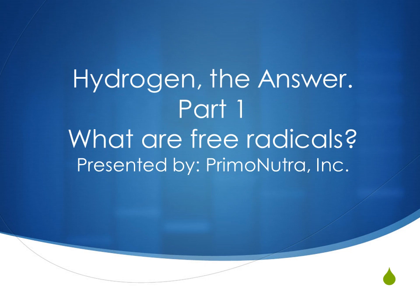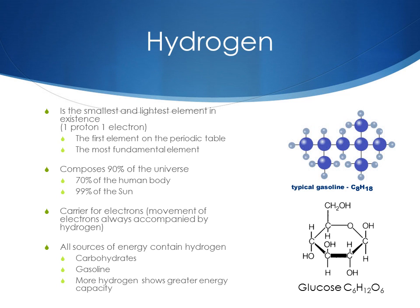What are free radicals? We're going to go over hydrogen real quick. Hydrogen is the smallest and lightest element in existence. It contains one proton and one electron, and it's the very first element on the periodic table, meaning it is the most fundamental element. Hydrogen existed before any other element existed, and in nature hydrogen doesn't exist by itself — it usually is combined with other atoms. Hydrogen composes 90% of the universe, 70% of the human body, and 99% of the sun, so hydrogen is pretty much everywhere.